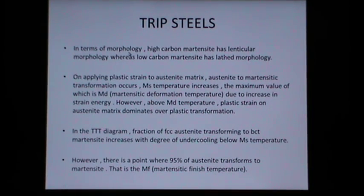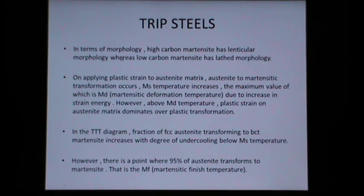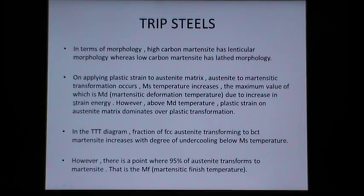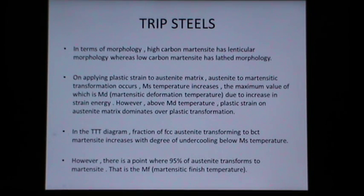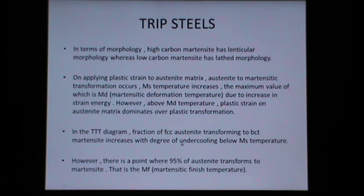In terms of morphology, high carbon martensite has lenticular morphology whereas low carbon martensite has lath morphology. On applying plastic strain to the austenite matrix, the austenite-to-martensite transformation occurs and the Ms temperature increases, reaching a maximum called the martensitic deformation temperature Md. Above Md, plastic strain on the austenite matrix dominates over the plastic transformation. In the TTT diagram, the fraction of FCC austenite transforming to BCT martensite increases with degree of undercooling below Ms.